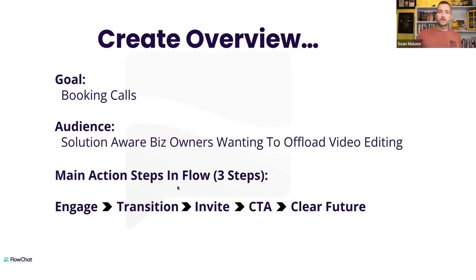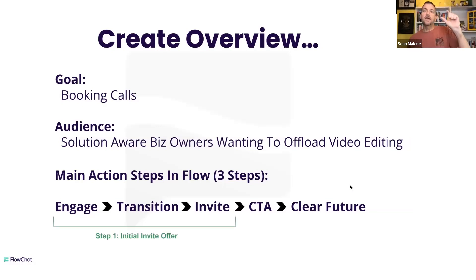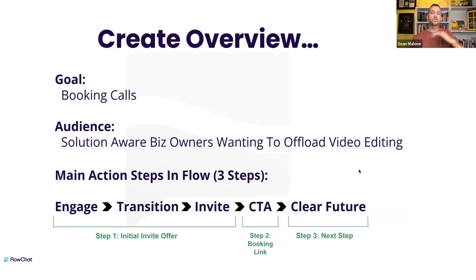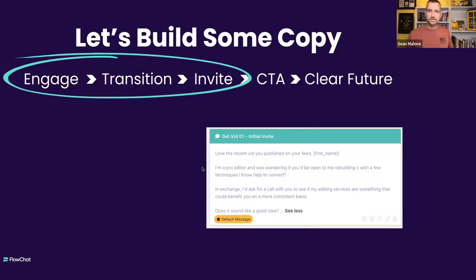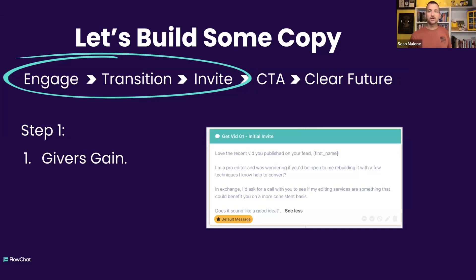In this particular flow, we're going to compact this down into three steps. Every DM conversation goes through these five steps, but if you can smush them — the first step is an exchange of value in a first message, then we have sending a booking link, and then our clear future will be the next step. So we're taking all the steps in the pipeline and moving them into three. Let's start building some copy. The first part of this, as I mentioned, is the engaged transition and invite.